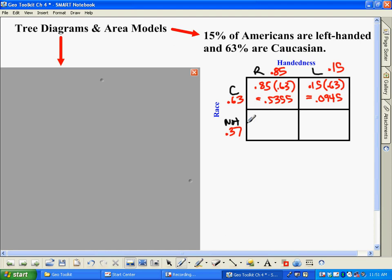You can do the same thing down here. You take 0.85, because that's the percentage of right-handers, times 0.37, the percentage of people that are not Caucasian. When you multiply that, you get 0.3145. And then finally, we would take 0.15 times 0.37, and when you do that, you get 0.0555.